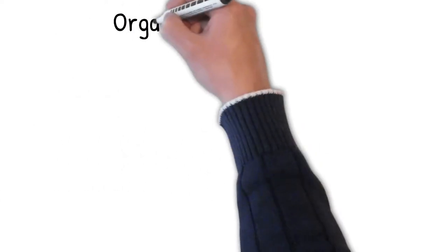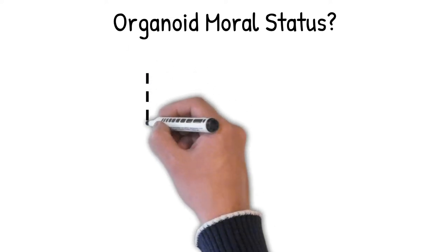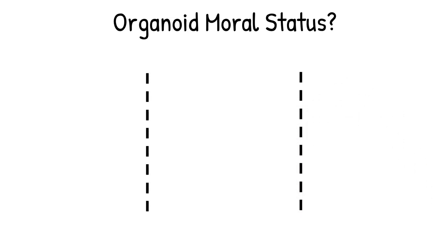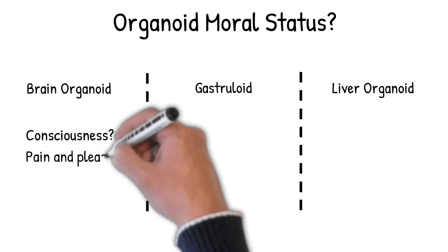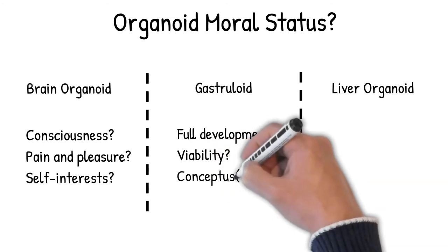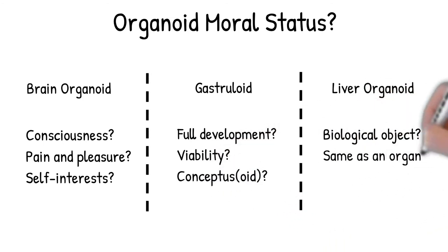So what is the moral status of an organoid, exactly? What do we morally owe them, if anything? Some bioethicists find it useful to differentiate between types of organoids in order to talk about their moral status. So, for example, a brain organoid and a gastruloid, an organoid that models a stage of embryogenesis, would not have the same moral status as a liver, lung, or kidney organoid. Brain organoids and gastruloids have unique moral considerations that other organoids do not.